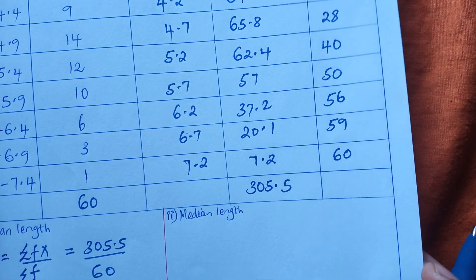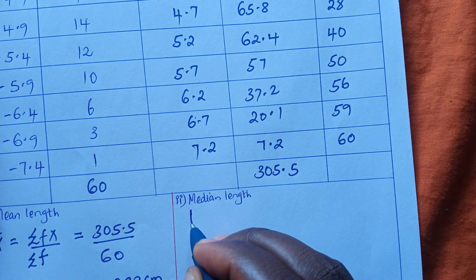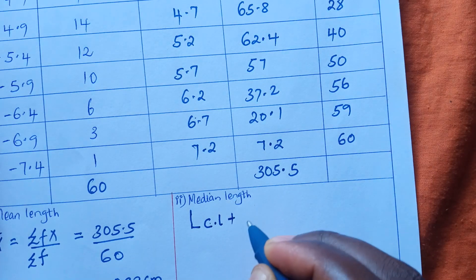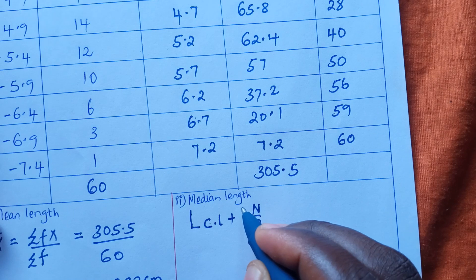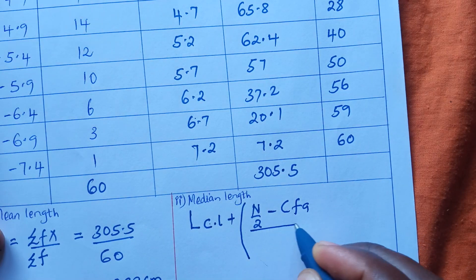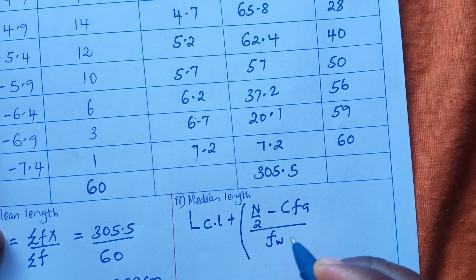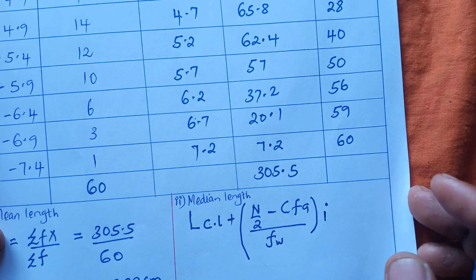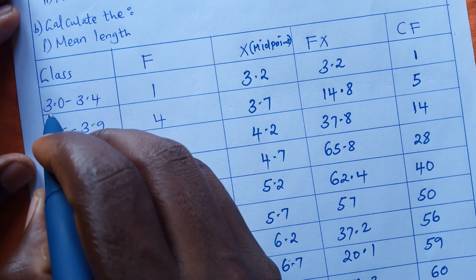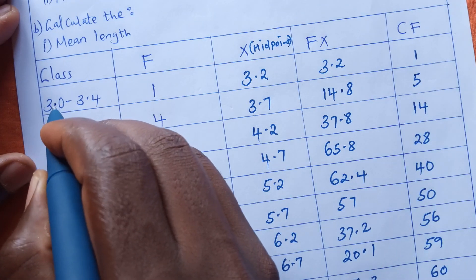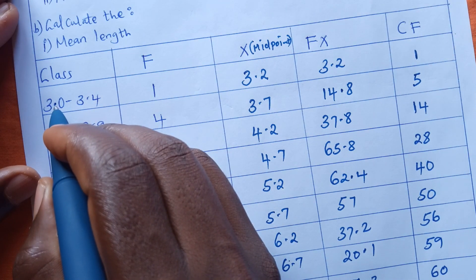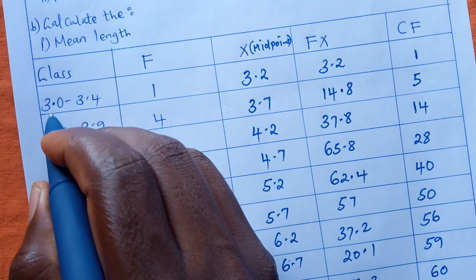For the median, we apply the formula: lower class limit plus, in brackets, n over 2 minus the cumulative frequency above, divided by the frequency within that class, multiplied by the class interval. To find the class interval, we look at the first class: the least value we can read is 2.95 and the next boundary is 3.45.